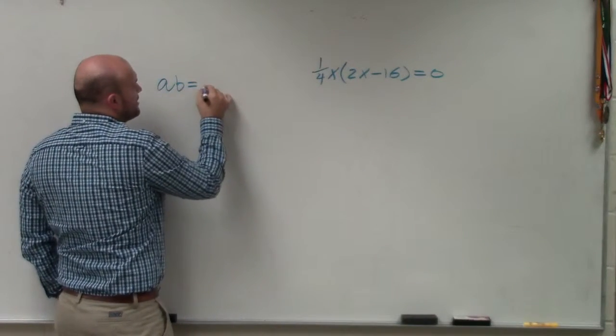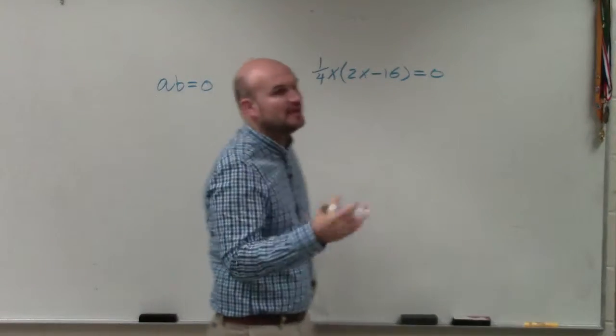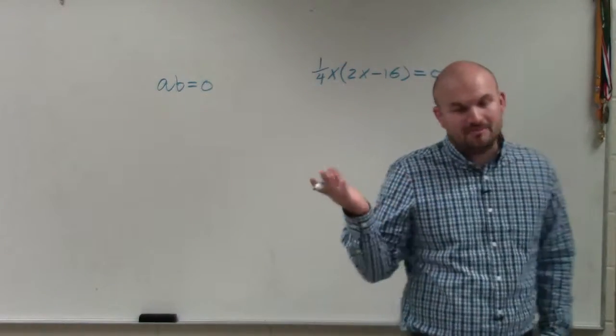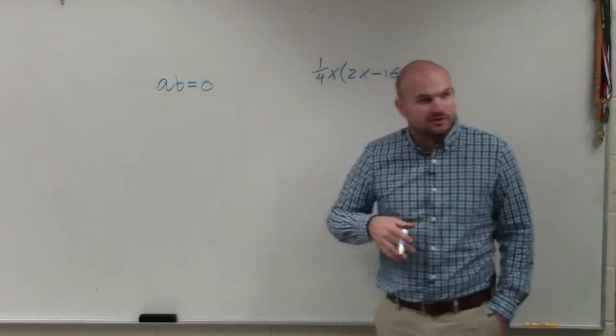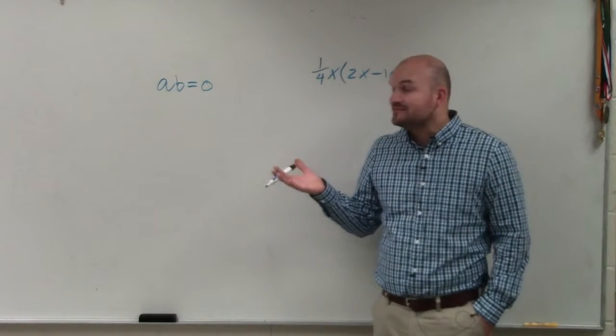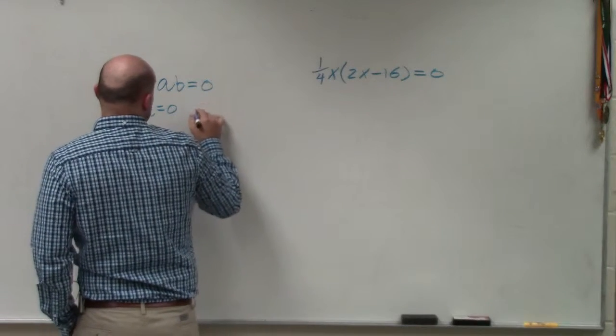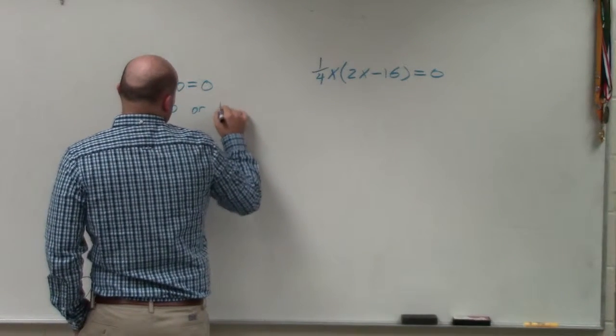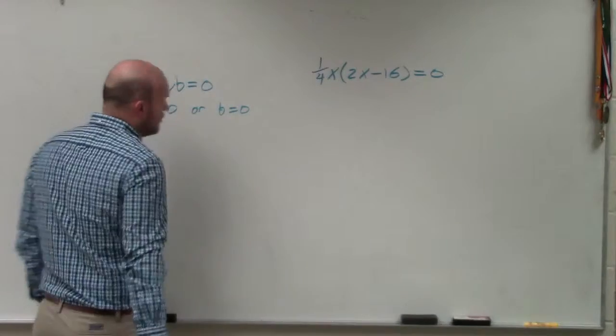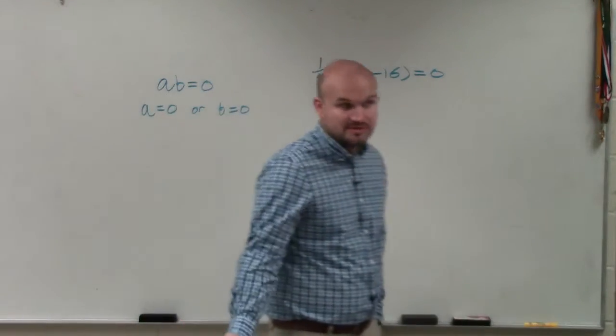Basically, all that the zero product property is stating is if you have two variables, a and b, we don't know the values to, but if the product of them is equal to zero, then we know that one of them has to be zero, or both of them could be zero. So we use or. We say a is equal to zero or b is equal to zero. One of them has to be zero.